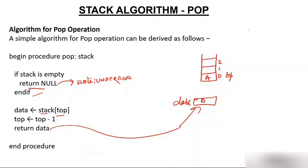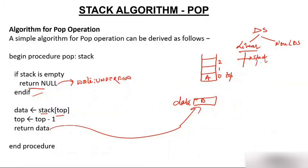To summarize, a stack is a linear data structure. There are two types of data structures: linear and non-linear. Stack is a linear data structure based on the concept of LIFO — Last In First Out — or FILO — First In Last Out. There are three operations in the stack: push, pop, and peek.